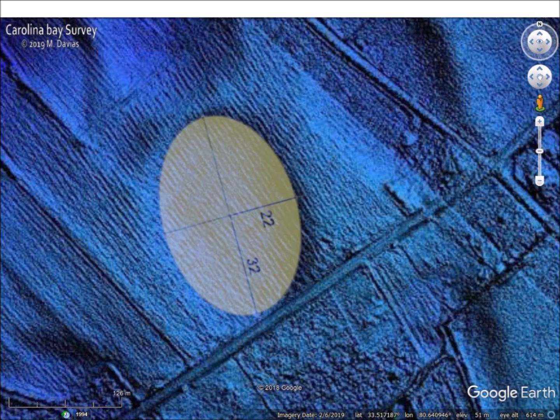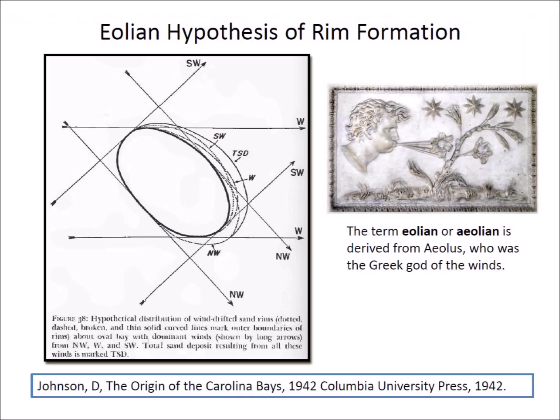Carolina Bays have a mathematically elliptical shape. The geometry provides a clue about their mechanism of formation. In 1942, Douglas Johnson proposed that the Carolina Bays formed by a complex process starting from artesian springs and wave action. He envisioned that the rims were formed by sand blown from the bay by the prevailing winds. This Eolian hypothesis of rim formation was questioned soon after its proposal because the Carolina Bays are known to be thickly covered with vegetation, making it virtually impossible for the wind to pick up much sand to transport it.